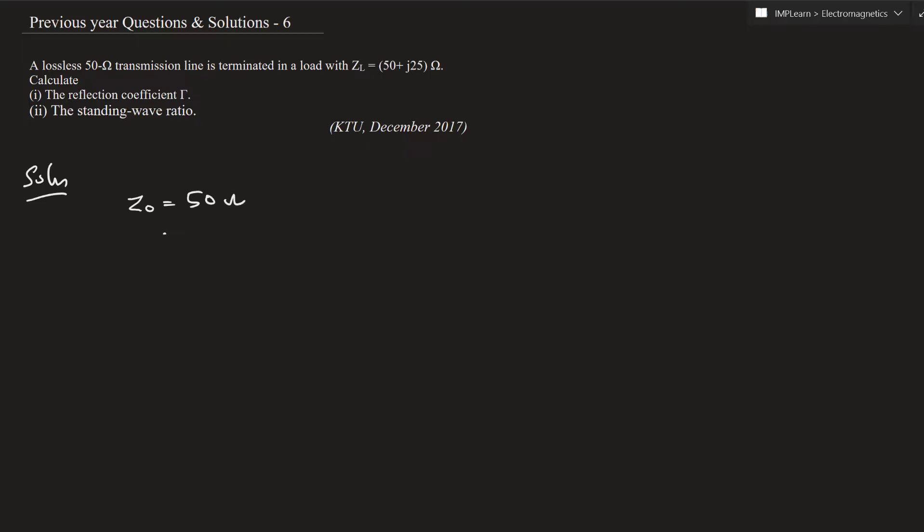Load impedance ZL is equal to 50 plus 25j. So we are given Z0 and ZL.